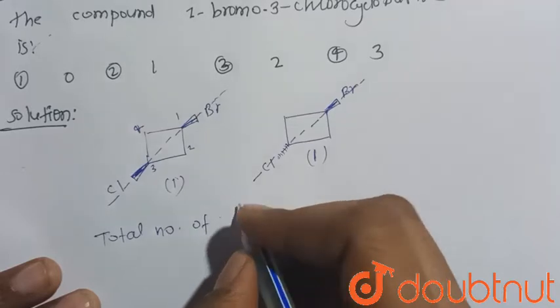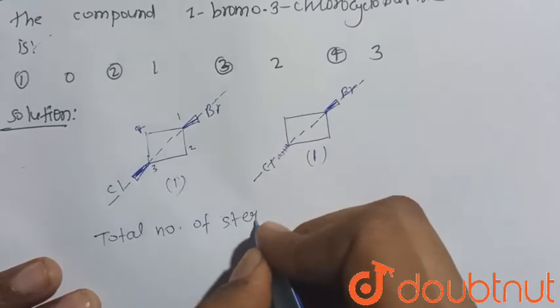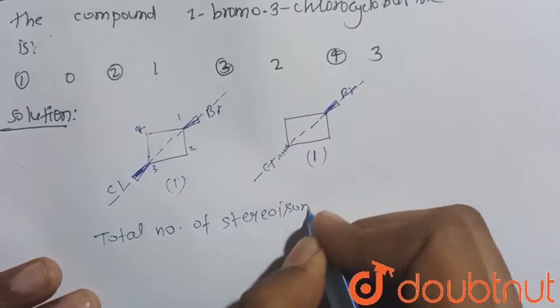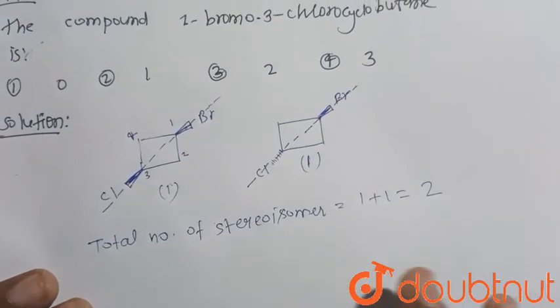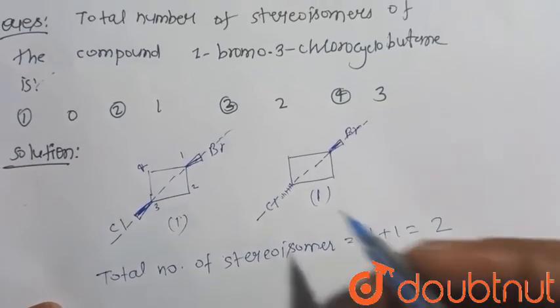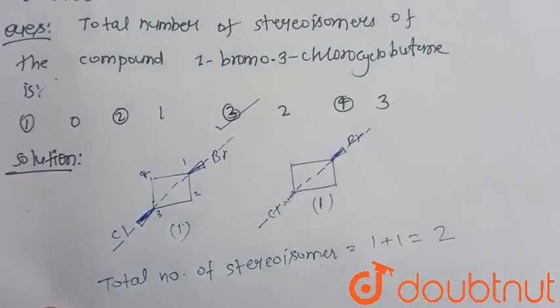Now consider the given options - in which option is it given? So it is given in option number third. Option number third, that is 2, would be the right choice. Thank you.